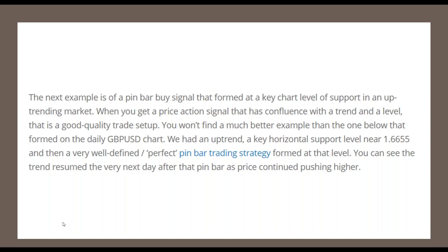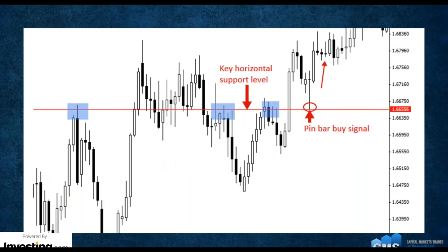We also have the pin bar trading strategy. We look at key areas of support and resistance and look for a pin bar reaction — where we see the latest candlestick pattern break that support level by the shadow or wick. This tells you that the buyers were trying to push down but couldn't hold it and bounced back up. Whenever we get a pin bar breaking that key horizontal level and it can't break through, it means we're going to have momentum back to the upside. So we have a small candle where the sellers had great momentum but lost it and were unable to maintain it — meaning the buyers are coming back into the marketplace.